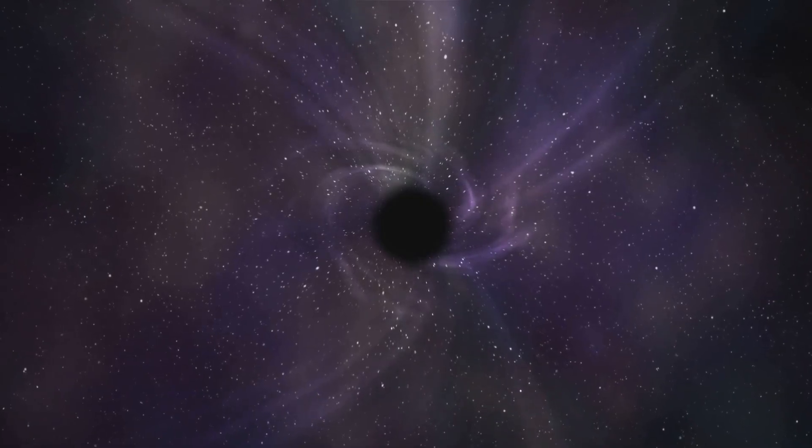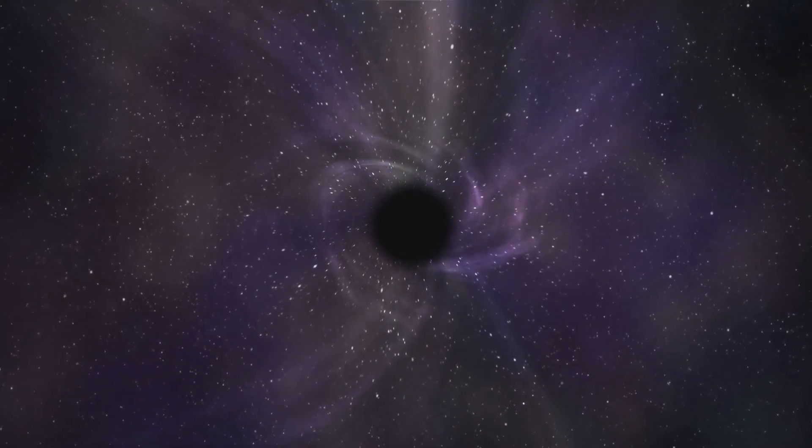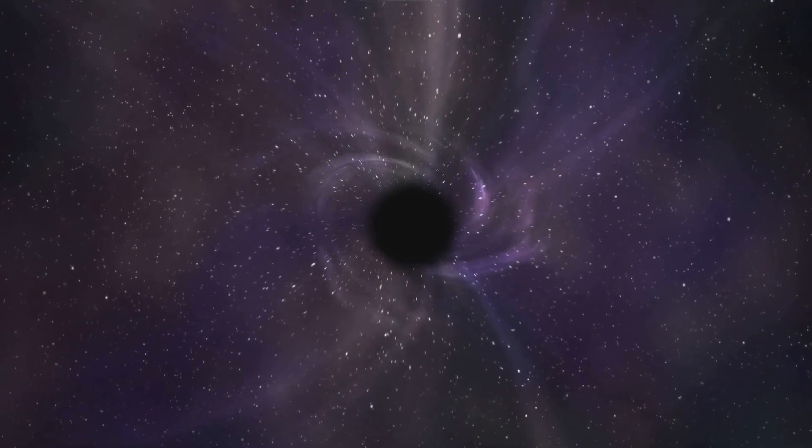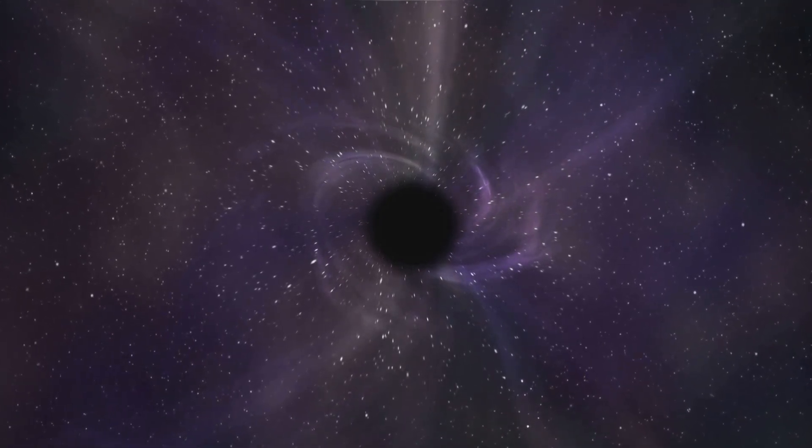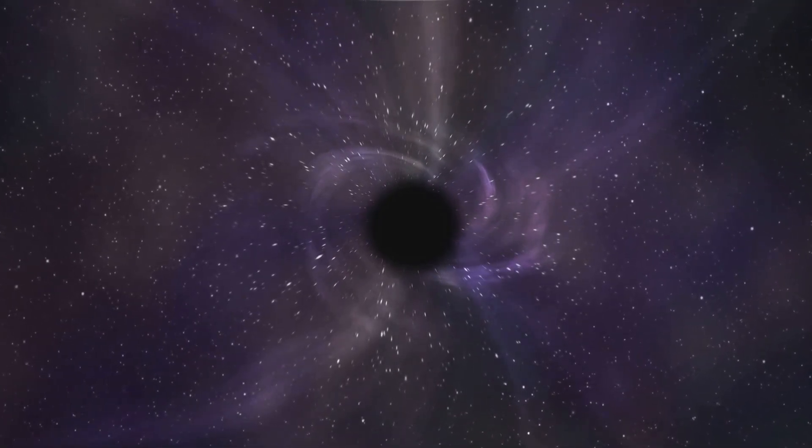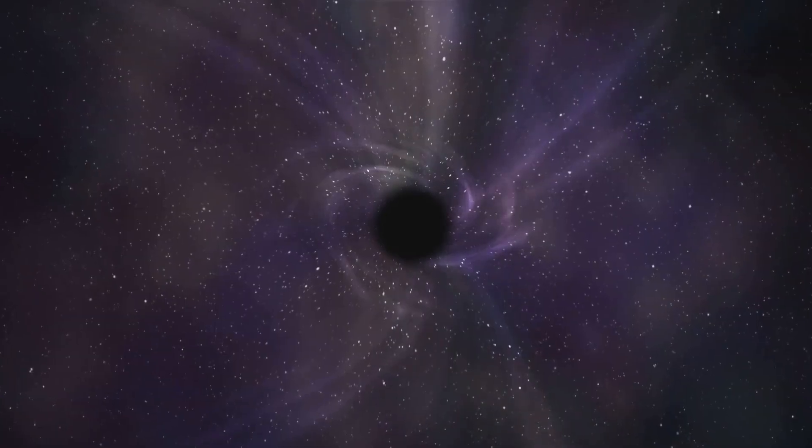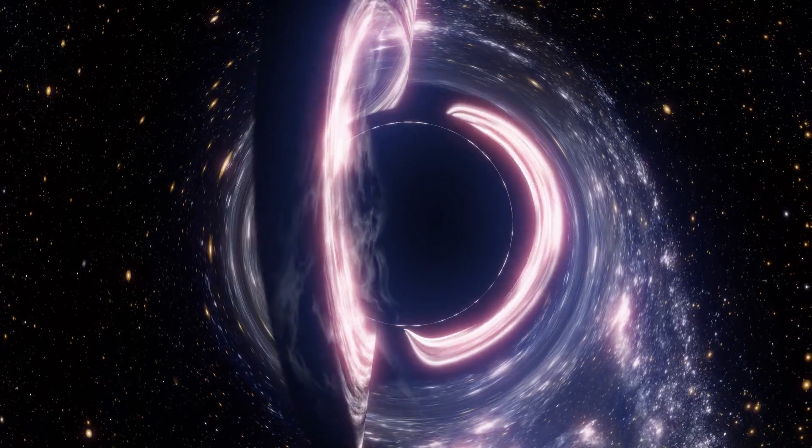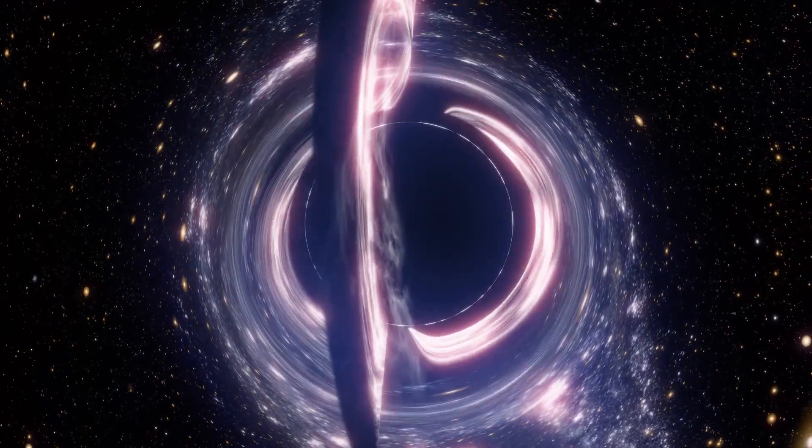If the core of a collapsing star is massive enough, not even neutron degeneracy pressure can withstand the pull of gravity. The immense gravitational forces cause the core to collapse further, forming a black hole.